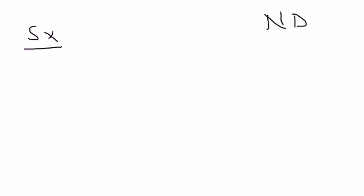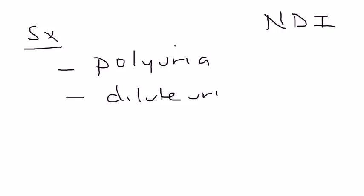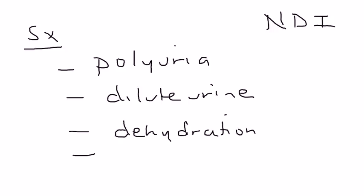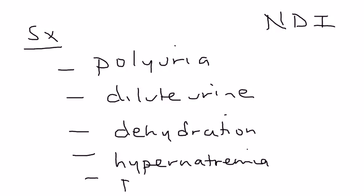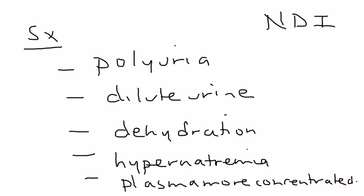So now we can get into the symptoms of NDI — nephrogenic diabetes insipidus. Polyuria: the patient urinates a significant amount of dilute urine. The result is dehydration. And also, because water is not coming back into the bloodstream, you get resultant hypernatremia — the blood plasma is actually more concentrated because there is less water. This hypernatremia can sometimes lead to neurologic symptoms, which is important to keep in mind.